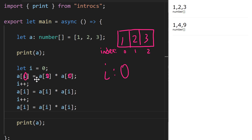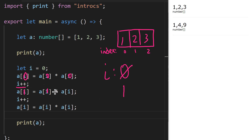This is exactly what we had before: `a[0]` is assigned the square of itself — 1 times 1 is 1 — we assign that back to `a[0]`. We then increment `i`, so `i` is no longer 0, it's now 1. Now we substitute 1 in, and this is the exact same line as before: `a[1]` is assigned the square of `a[1]`.